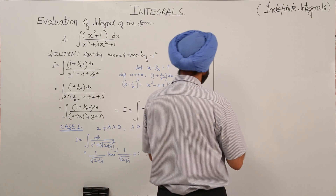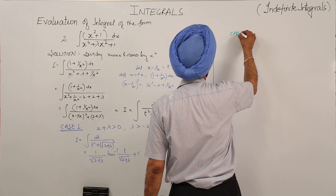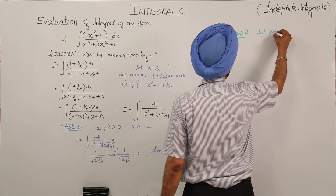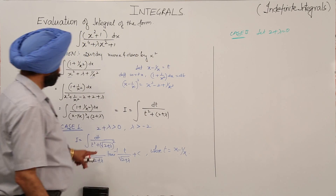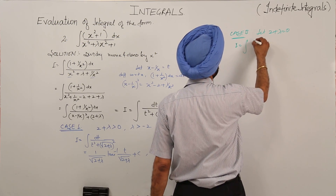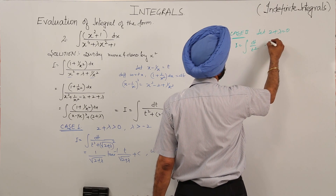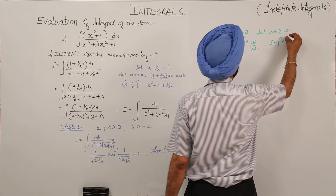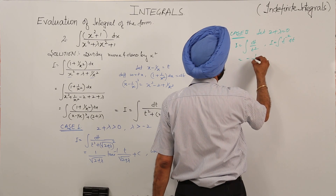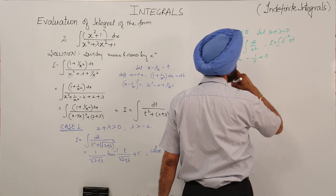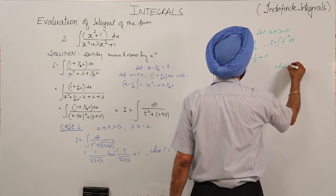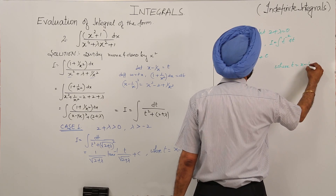Case 2: Let 2 + λ = 0. Now we have the integration of dt upon t², which equals the integral of t⁻² dt, giving -1/t + C, where t = x - 1/x.